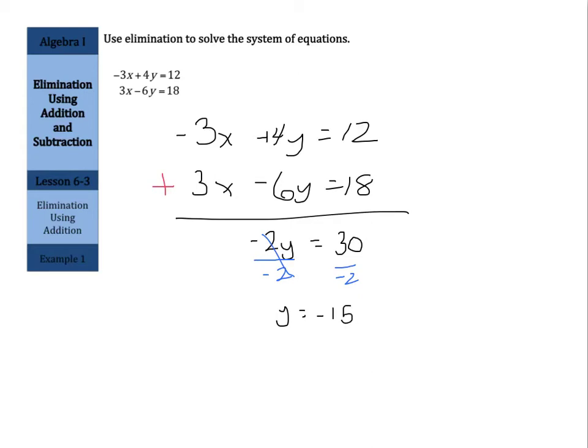Now, for step 2, pick one of the equations. I'm going to pick the first one. It doesn't matter what you pick. Negative 3x plus 4y equals 12. And now I need to substitute in the negative 15 for y. So I get negative 3x plus 4 times negative 15 equals 12. And so now I get negative 3x minus 4 times 15 is 60, and the positive times the negative is just minus 60 equals 12.